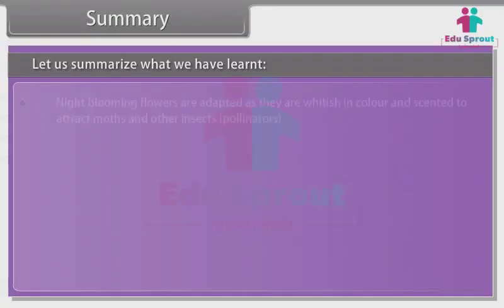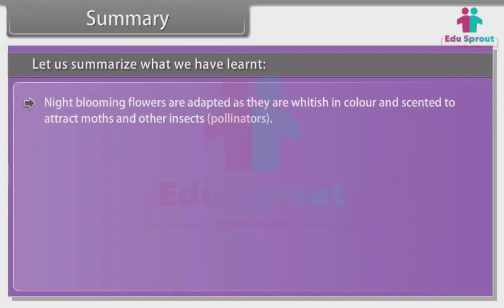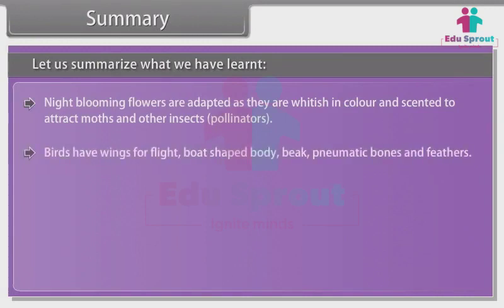Night blooming flowers are adapted as they are whitish in color and scented to attract moths and other insects, pollinators. Birds have wings for flight, boat-shaped body, beak, pneumatic bones and feathers.